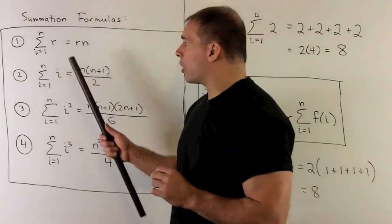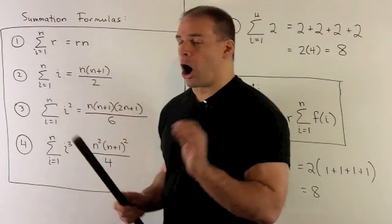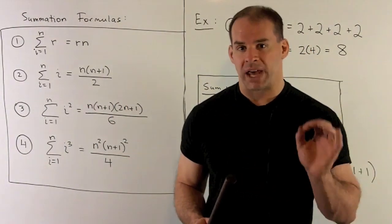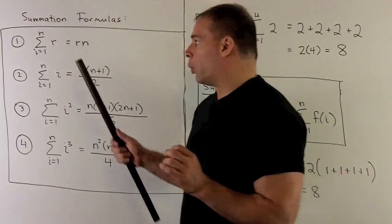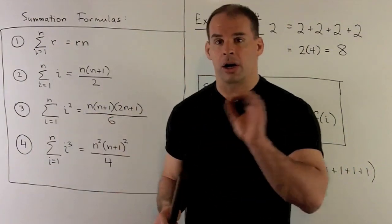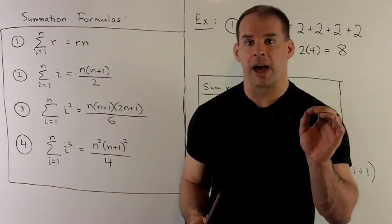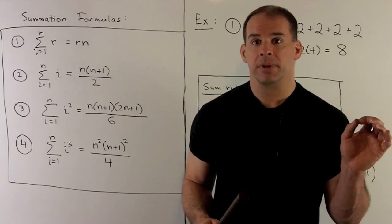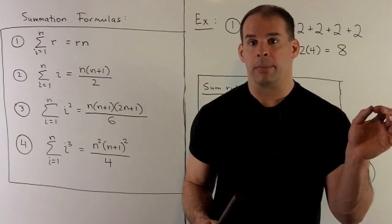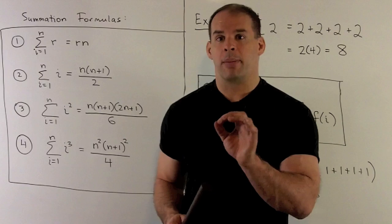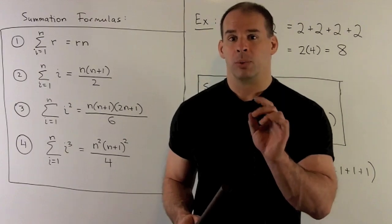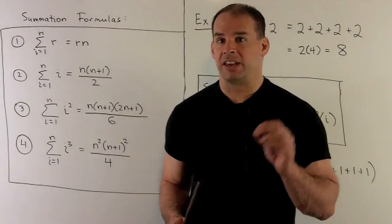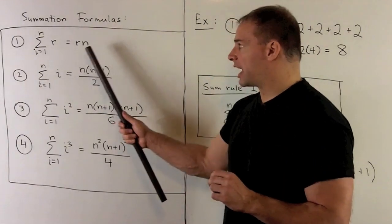Here our function is r, so no matter what you put in, an r comes out. We put in 1, r comes out; put in 2, r comes out; put in n, r comes out — and then we sum. So we're just taking the sum of r with itself n times, which gives us r times n.